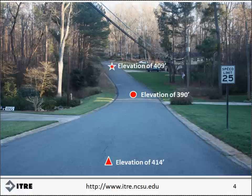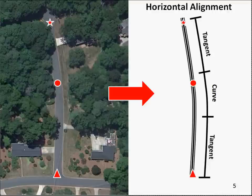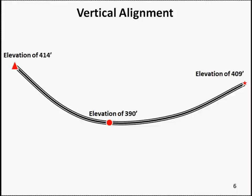The overhead aerial view of the roadway is shown on the left, and the simplified roadway alignment is shown on the right, with points corresponding to the locations discussed in the street-level view. Each end of the roadway is a tangent, and they are connected with a horizontal curve. The vertical alignment is shown in profile view from the perspective of someone standing alongside and perpendicular to the roadway. As illustrated, the triangle has an elevation of 414 feet, the circle has an elevation of 390 feet, and the star has an elevation of 409 feet. This profile view shows a sag vertical curve with a downhill grade leaving the triangle, a flat grade near the circle, and an uphill grade approaching the star.